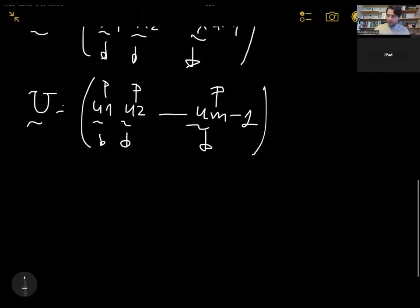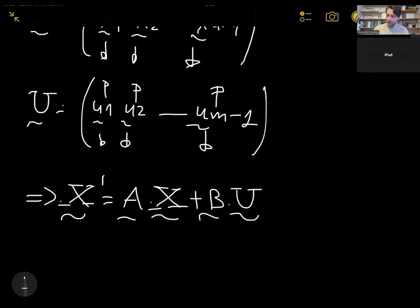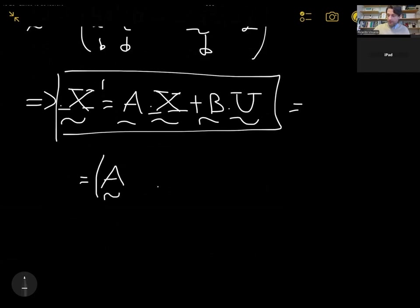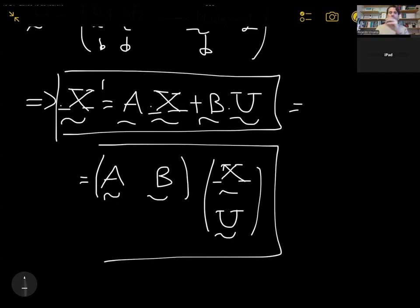So my system is going to be given by X', the snapshot matrix starting from the second one, equals to A, which is the linear operator, times X, which is the original dynamic system, plus B times U. And this can be expressed in block form. I can have a block matrix composed by A and B, and here this is going to be a column block matrix where I have my X and my U. These two forms are equivalent, right? This means that I have A times X plus B times U.